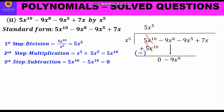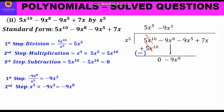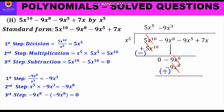We bring down the next term, minus 9x⁸, and go through the three steps again. Division: minus 9x⁸ divided by x⁵ gives minus 9x³, written in the quotient. Multiplication: x⁵ times minus 9x³ gives minus 9x⁸, written below what we brought down. Subtraction: minus and minus become plus, so one term is minus and one is plus — they cancel, giving 0.